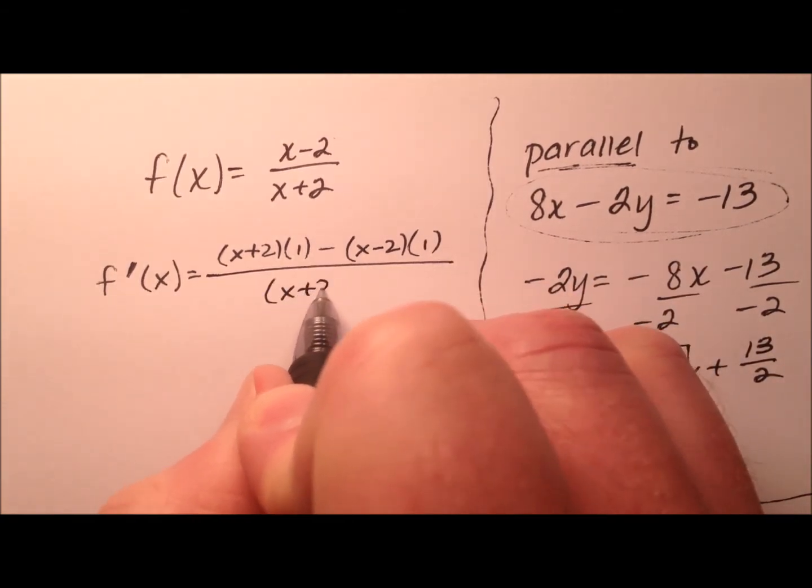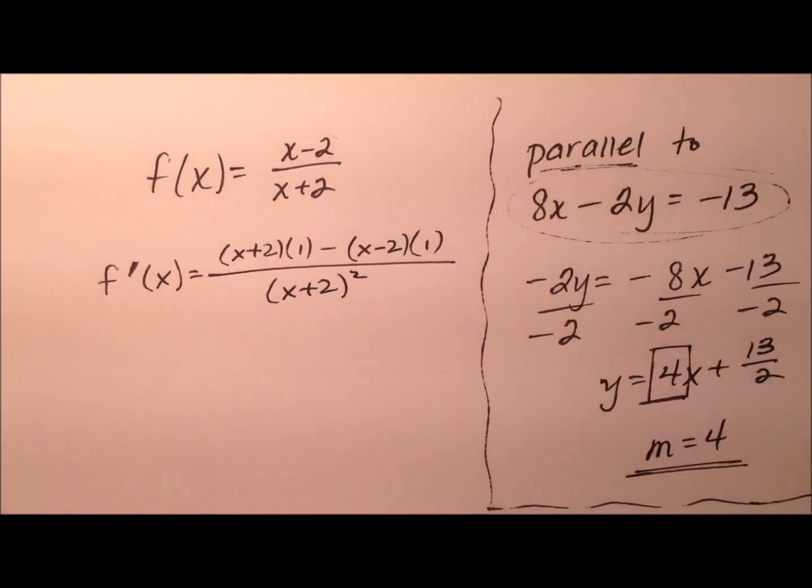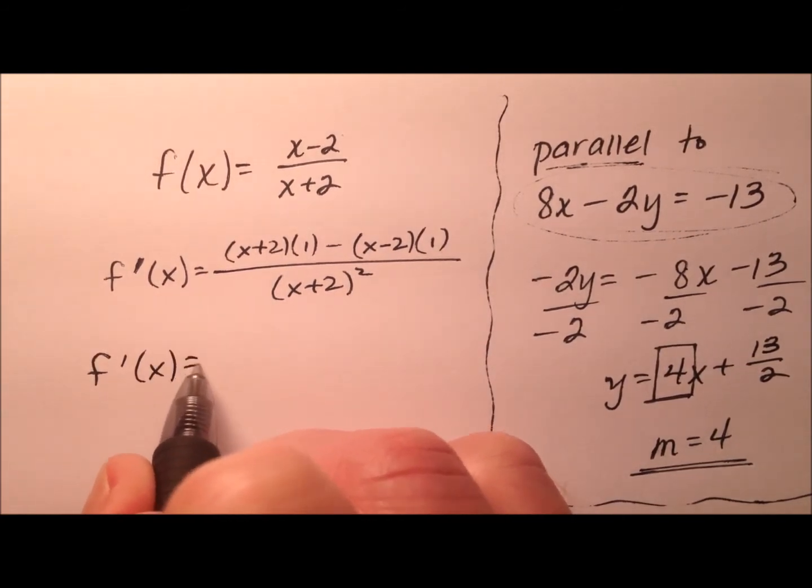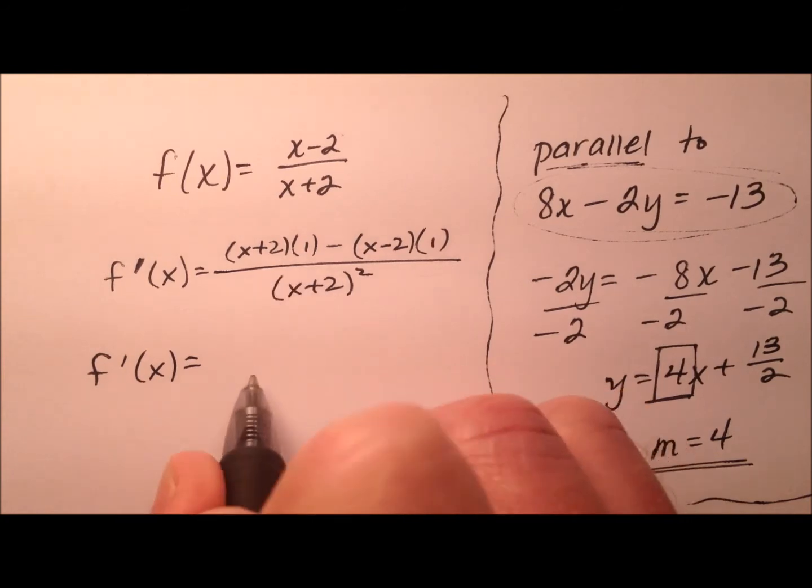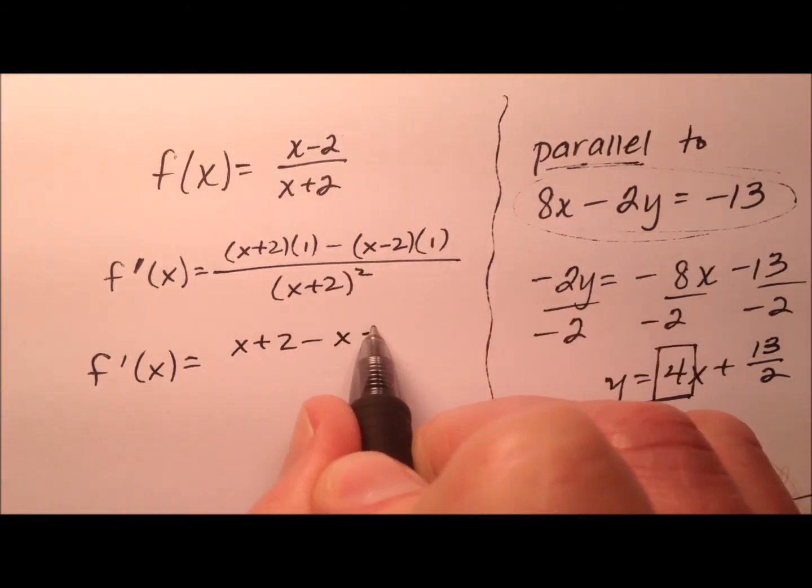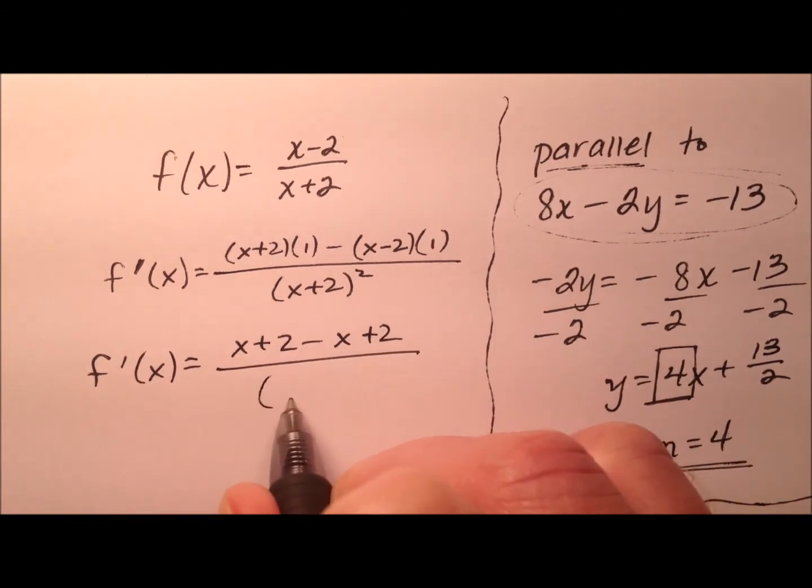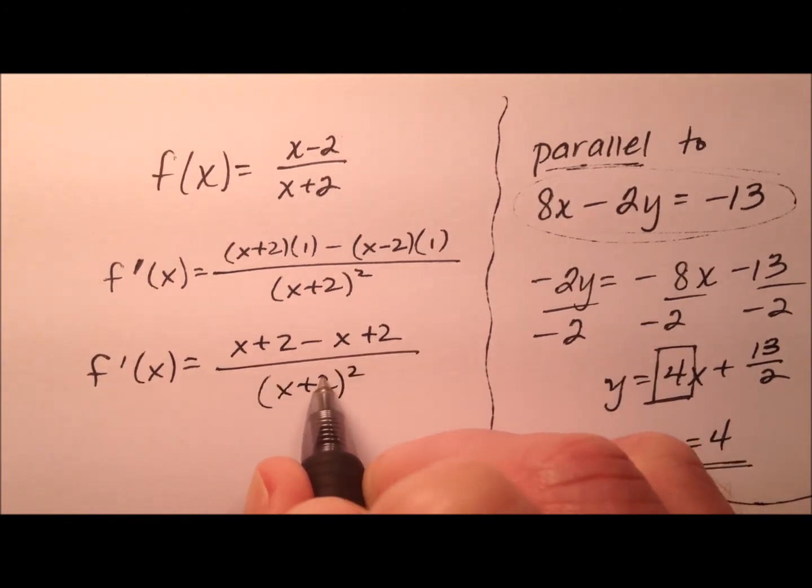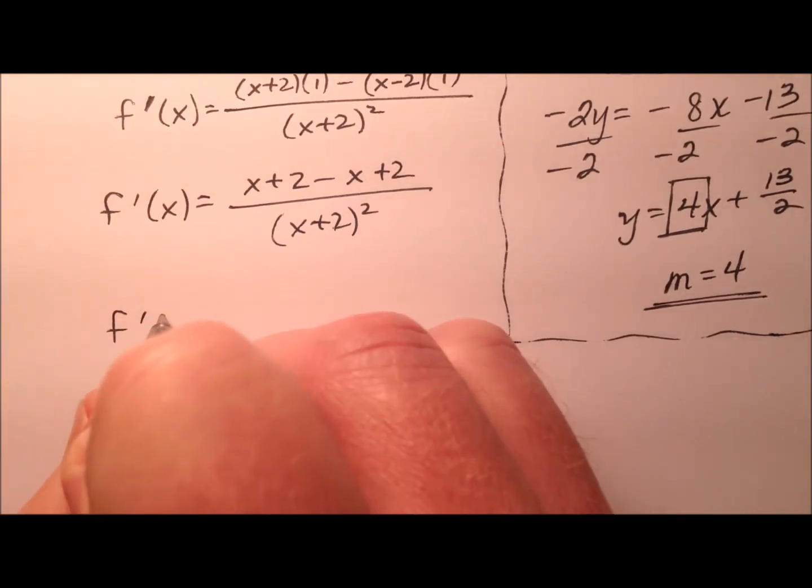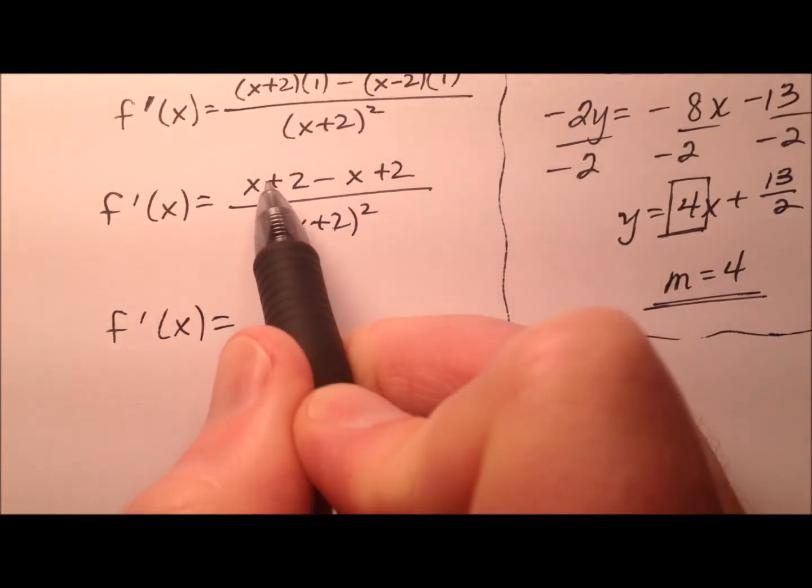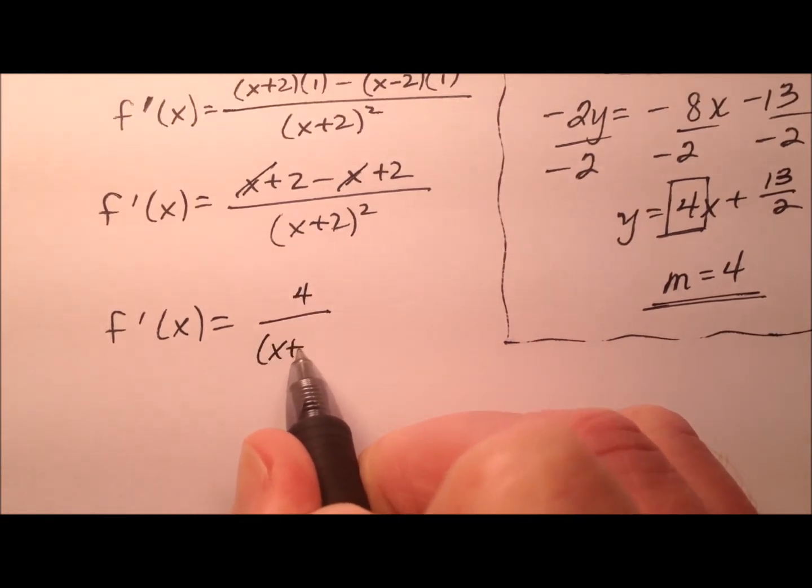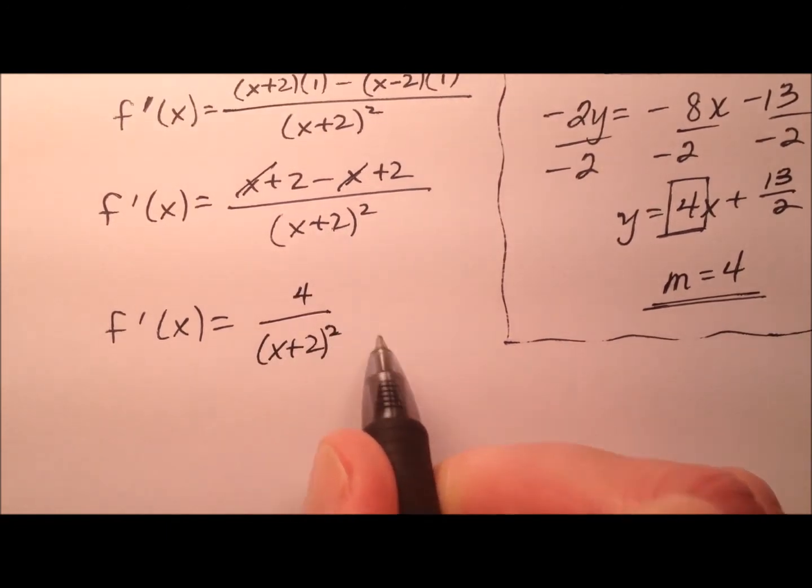And that, of course, is all over the square of the denominator. So let's take a moment and kind of work this out a little bit. So x plus 2 minus x plus 2 all over this quantity x plus 2 squared, which now simplifies all the way down to 4 over x plus 2 squared.